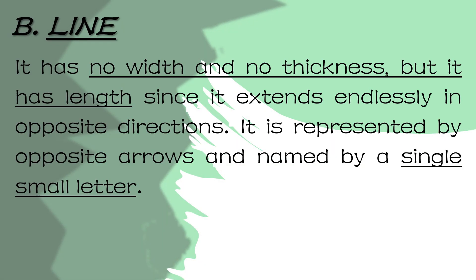Next is the line. Kapag naman sinabing line, it has no width and no thickness, but it has length since it extends endlessly in opposite directions. It is represented by opposite arrows and named by a single small letter. So kapag sinabing line, wala itong kapal at wala rin lapad, pero meron siyang haba, since nage-extend sila sa opposite directions. Ito ay nire-represent ng opposite arrows at pinapangalanan using small letters. This is read as line A.